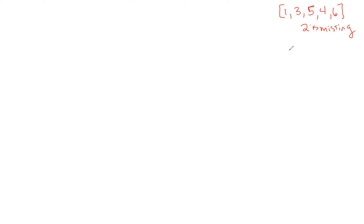Because this array is unsorted, we can use a formula to find out what the actual total should be. That formula is n times n plus one over two — that calculates the summation of the numbers from one to six in our case. If we put six in there as n, then we have seven times six is 42 divided by two, which is 21.